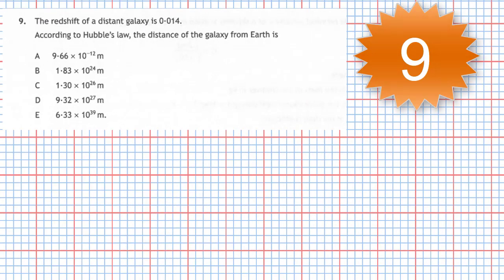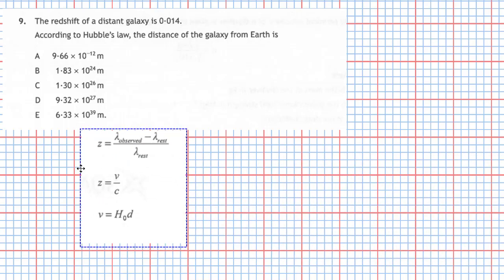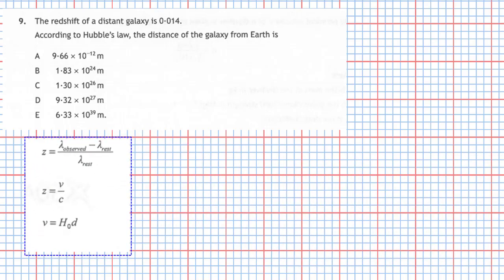Question 9 from Section 1 of the 2019 Higher Physics examination. The redshift of a distant galaxy is 0.014. According to Hubble's Law, the distance of the galaxy from the Earth is — and you have five distances. Looking at the data sheet, the redshift z equals the observed wavelength minus the rest wavelength, divided by the rest wavelength, but we're not dealing with wavelengths here, so we can ignore that one.